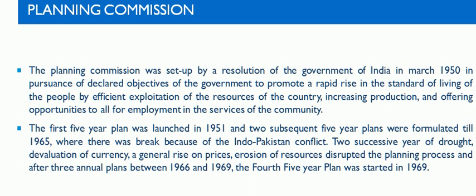Mr. Jawaharlal Nehru was the first chairman of the planning commission. The first five-year plan was launched in 1951 and two subsequent five-year plans were formulated till 1965, where there was a break because of the Indo-Pakistan conflict, two successive years of drought, devaluation of currency, a general rise in prices, and erosion of resources that disrupted the planning process. After three annual plans between 1966 to 1969, the fourth five-year plan was started in 1969.